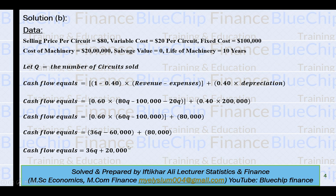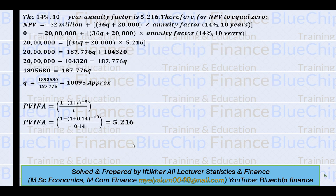After full simplification, the cash flow equals 36Q plus 20,000. Now we apply the NPV formula: NPV equals minus initial cash outlay plus cash inflows multiplied by the annuity factor. We need the present value annuity (PVA) factor at 14% for 10 years. Using the formula: [1 minus (1 plus 0.14) raised to the power of minus 10] divided by 0.14, the annuity factor equals 5.216.